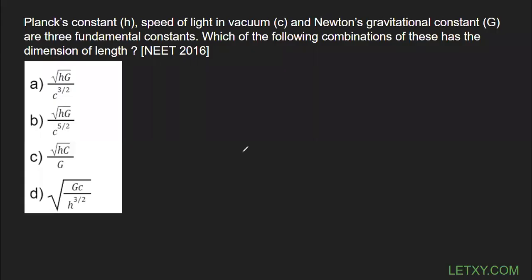Hello everyone. We have a question from the units and dimensions topic. They are saying Planck's constant h, speed of light in vacuum c, and Newton's gravitational constant G are the fundamental constants which are given to us. Which of the following combinations of these has the dimensions of length?